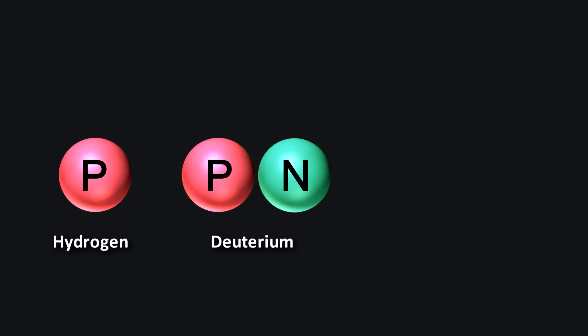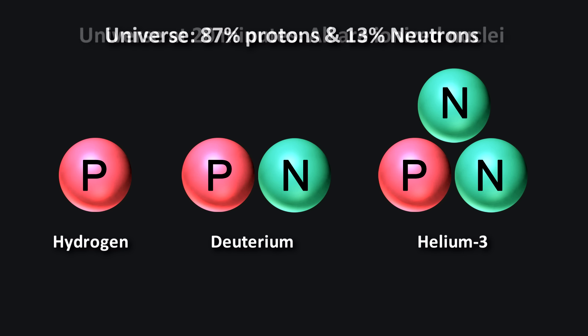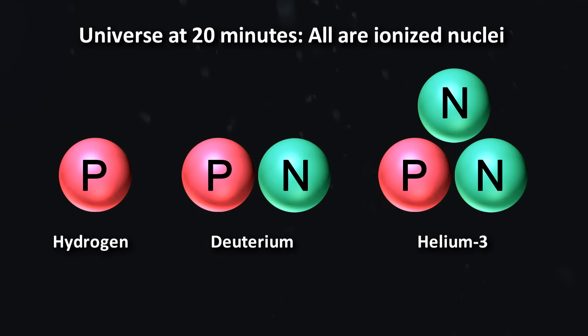which is an isotope of hydrogen with an additional neutron, a very small amount of helium-3, and small traces of lithium-7 nuclei. The universe consisted of about 87% protons and 13% neutrons. So we see that most of the universe at this point is just protons or hydrogen nucleons. Pay attention to the fact that at this point in time, it's all ionized nuclei, so only the core of the atoms exist, no electrons bound to them.